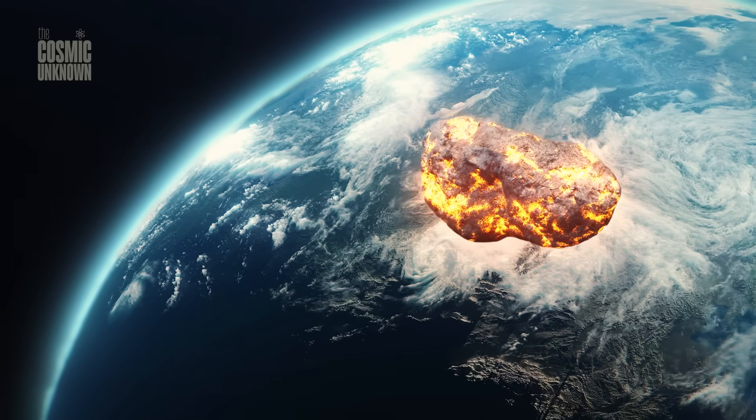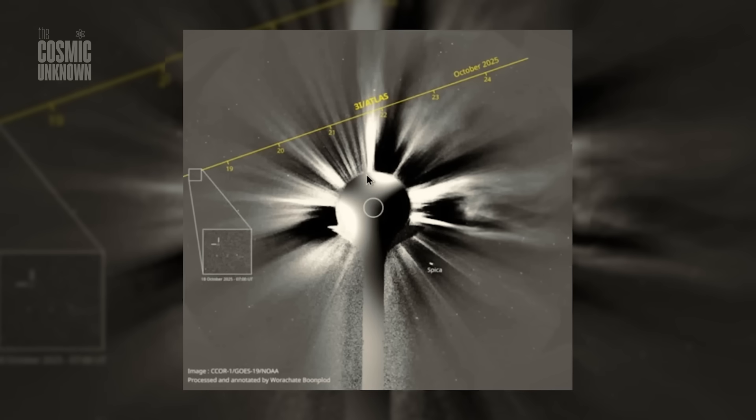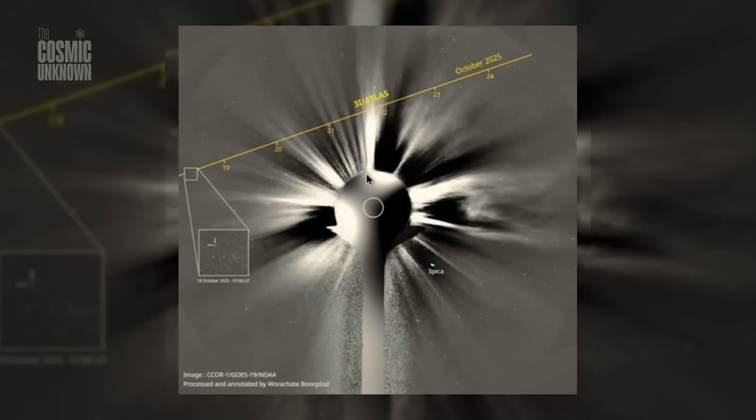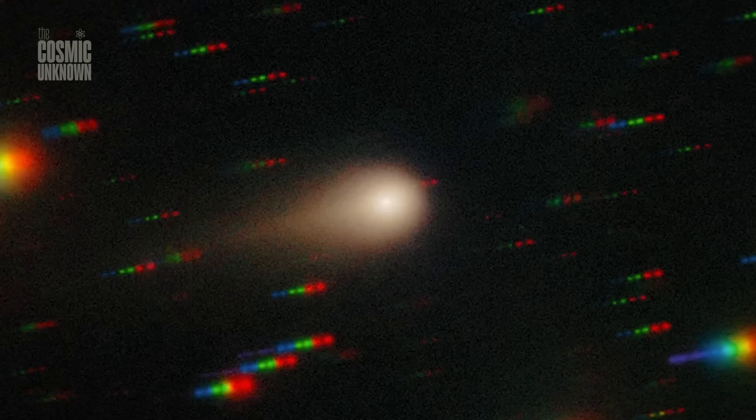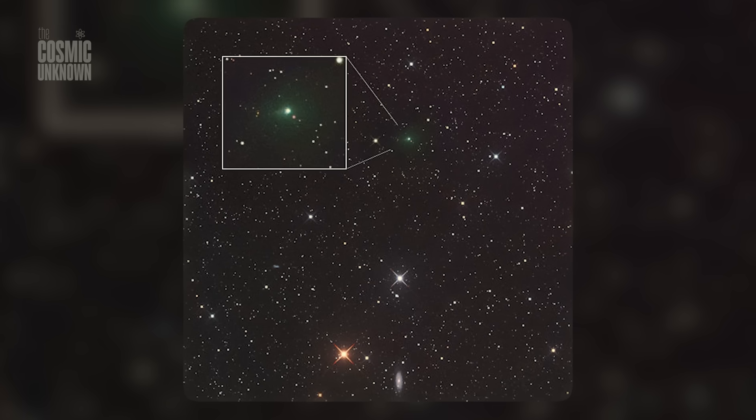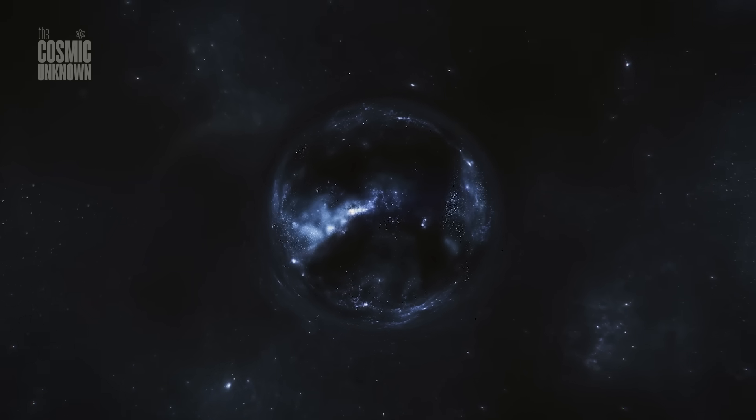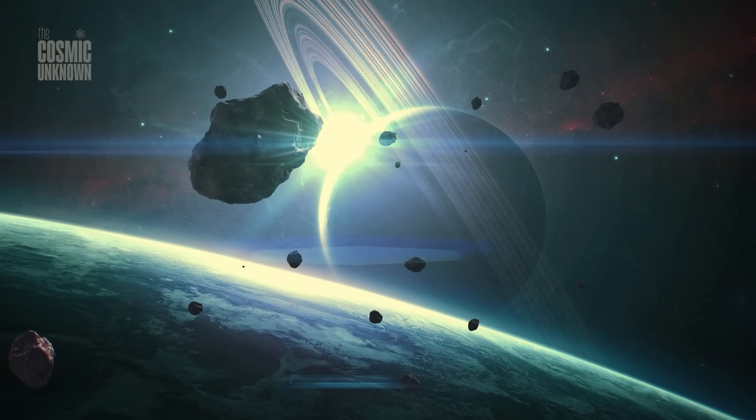The new image feels like a moment where everything lined up just right—a frame where the distance, the timing, and the technique came together and gave us a clear look at what 3i Atlas can be when the sky cooperates. But that steady picture doesn't erase the fact that comets are messy, and 3i Atlas is still reacting to sunlight, still letting out jets here and there, still shifting in small ways that only show up when you follow it night after night. It's almost like the clean photo is one part of the story, and the rougher observations are another part.